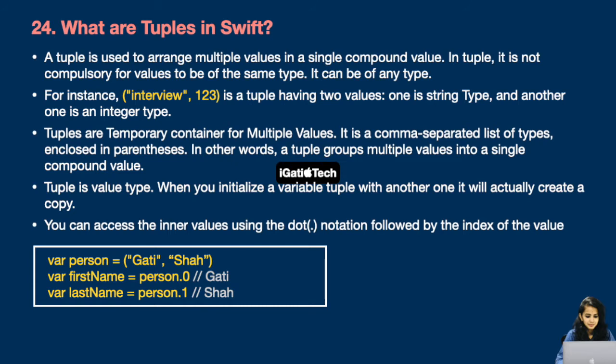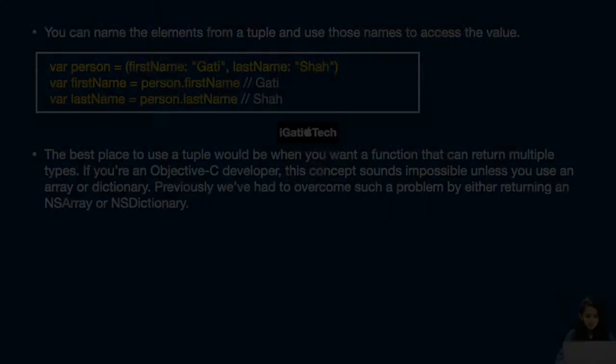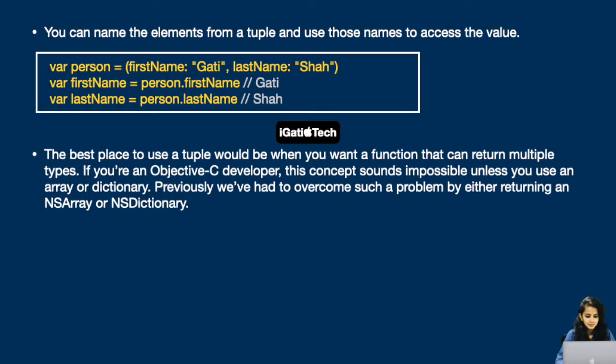Here I've taken a person variable with two strings accessed via dot notation with the index. You can also name the elements in a tuple and use those names to access the values — for example, naming elements firstName and lastName. The best place to use a tuple is when you want a function that can return multiple types. For Objective-C developers this sounds impossible unless you use an array or dictionary — previously we had to return an NSArray or NSDictionary.